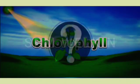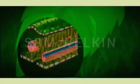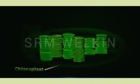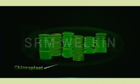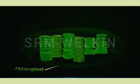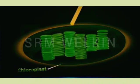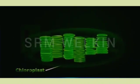Chlorophyll is the green pigment found in chloroplasts present in the cells of leaves. The chloroplasts absorb and store the energy from the light. The stored energy is then further utilized in the process of food manufacture.